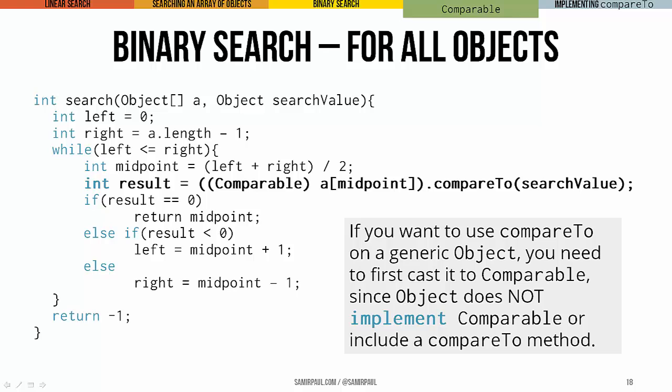So now coming back to our binary search, one important thing we have to note. Before you call the compareTo method on some arbitrary object, and in this method, that's what we have. We have objects. We don't have some more specific type. Before you call the compareTo method, you have to first cast it to comparable. Because object itself, the object class in Java, doesn't implement the comparable interface. And it doesn't include a compareTo method, which means if you're writing a method that generally deals with objects, rather than some specific type that we know is comparable, you know that you have to cast it to comparable before you use a specifically comparable method.